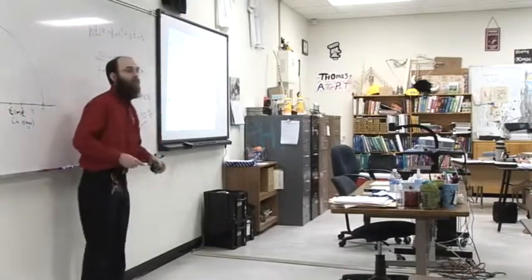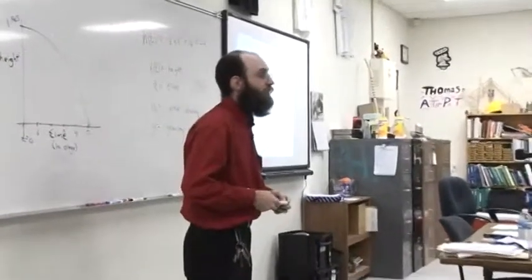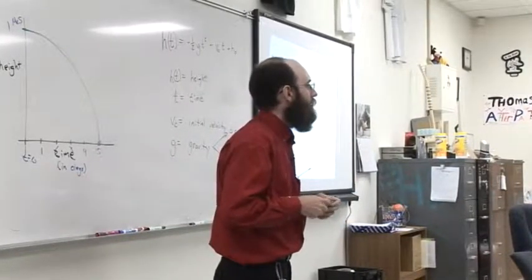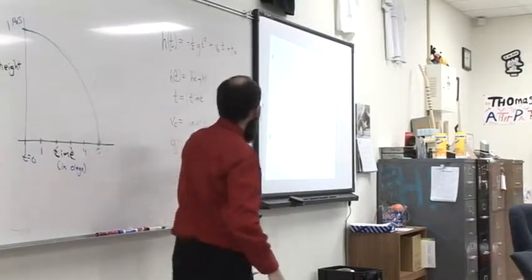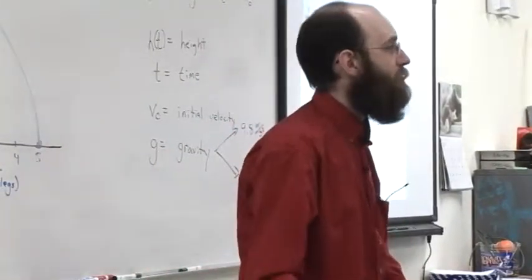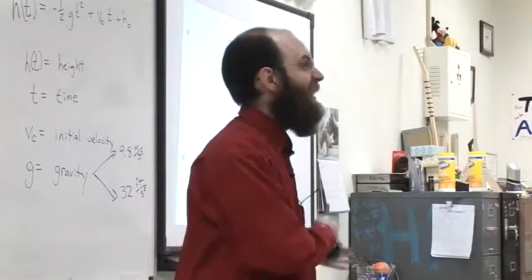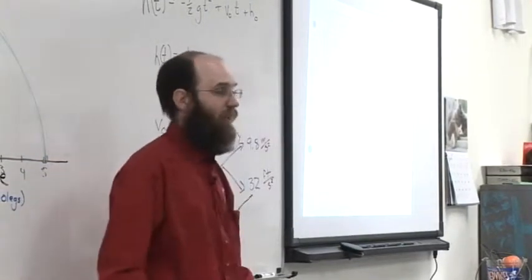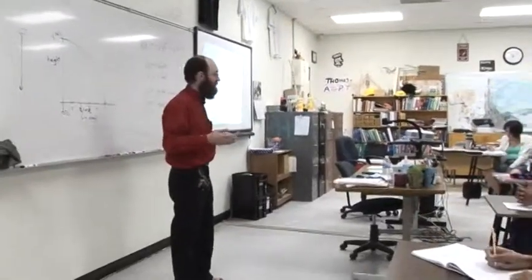You can't use miles per hour because that's a velocity, not an acceleration. Acceleration would be miles per hour per hour — miles per hour squared. The standard values we work with are 9.8 m/s² and 32 ft/s².